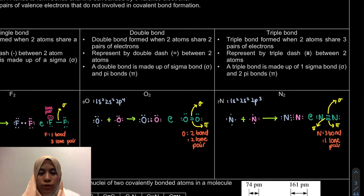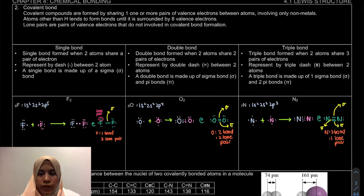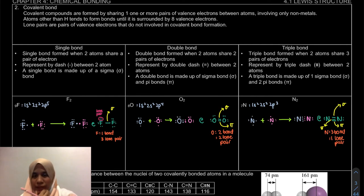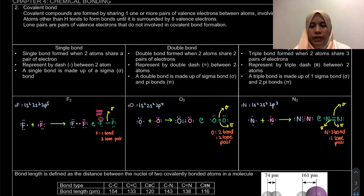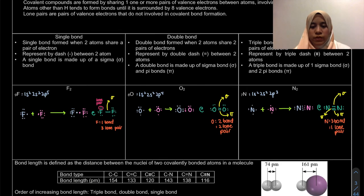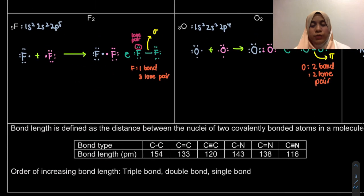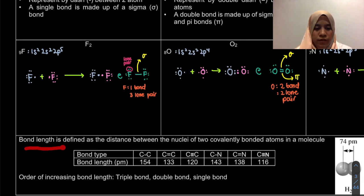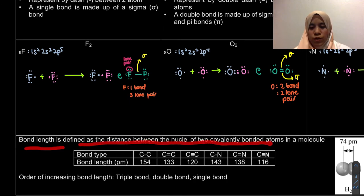That's the drawing for our covalent bond. We'll draw many more covalent bonds later. Now, for the case of covalent bond, we're going to learn about bond length. Bond length is defined as the distance between the nuclei of two covalently bonded atoms in a molecule.